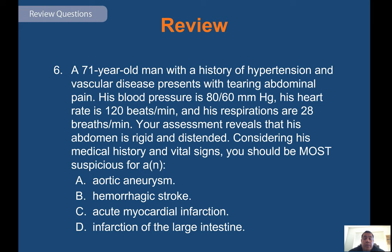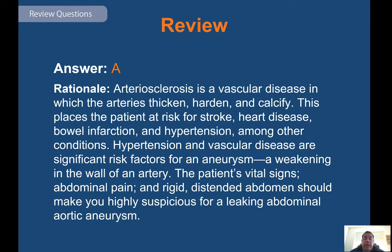A 71-year-old man with a history of hypertension and vascular disease presents with tearing abdominal pain. His blood pressure is 80/60, heart rate is 120 beats per minute, and respirations are 28 breaths per minute. Assessment reveals a rigid and distended abdomen. Arteriosclerosis is a vascular disease in which the arteries thicken, harden, and calcify, placing the patient at risk for stroke, heart disease, bowel infarction, and hypertension. Hypertension and vascular disease are significant risk factors for aneurysm — a weakening in the arterial wall. The patient's vital signs, tearing abdominal pain, and rigid distended abdomen should make you highly suspicious for a leaking abdominal aortic aneurysm (AAA).